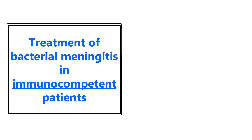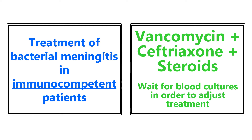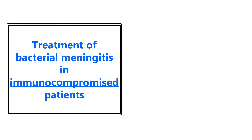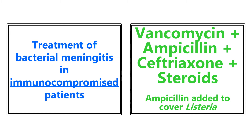Treatment of bacterial meningitis in immunocompetent patients — notice that immunocompetent is underlined. It's going to be a three-drug regimen: vancomycin, ceftriaxone, and steroids. You're going to wait for the blood cultures in order to adjust treatment. For immunocompromised patients, you're going to be adding one drug: vancomycin, ampicillin, ceftriaxone, and steroids. The reason you're adding ampicillin for these immunocompromised patients is to cover for listeria.